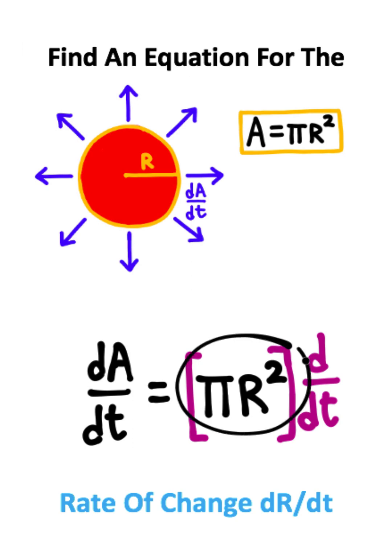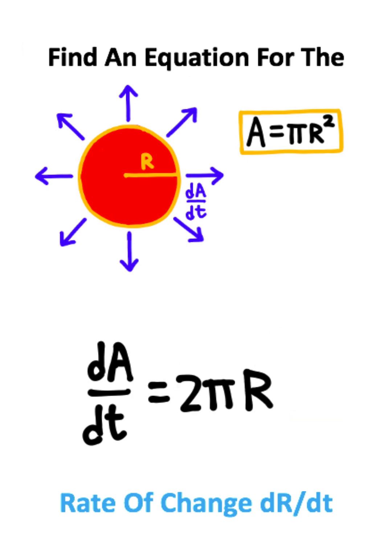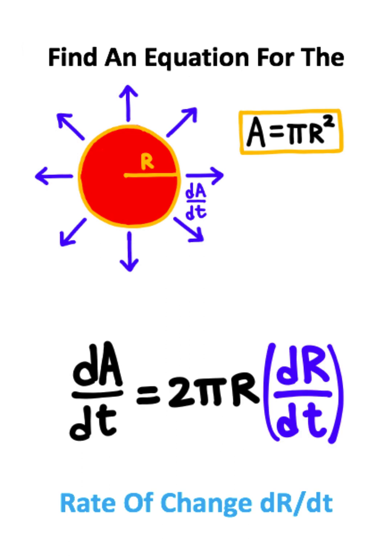Now to find the derivative of pi r squared, what I can do is use the exponent shortcut on r squared, where I take the exponent, multiply it by the front, and then subtract one from the exponent. But since I took the derivative of the radius with respect to time, I need to take this entire quantity and multiply it by dr over dt.